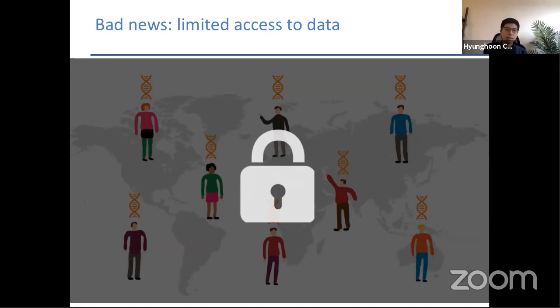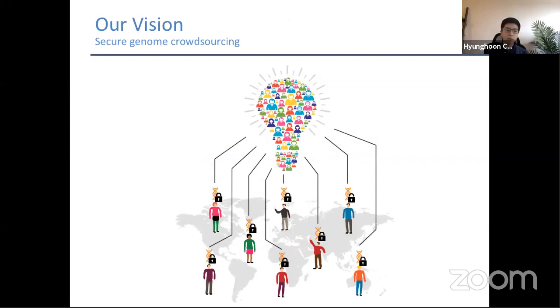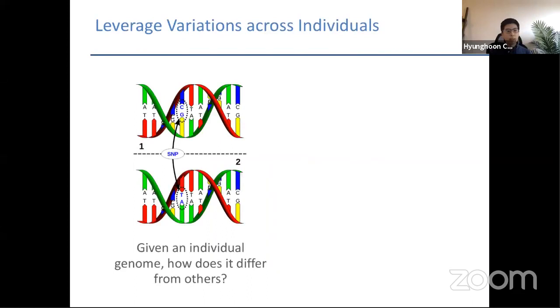But the bad news is that a lot of this data lies outside the reach of researchers. A lot of these data are stored in isolated silos that are difficult to pool together, and even in cases where we do have access to centralized repositories, these are often put under strict and time-consuming access review procedures that slow down the rate of research. What we envision is a new computational platform where individuals and institutions can contribute their private genomic data to scientific studies in a secure manner.